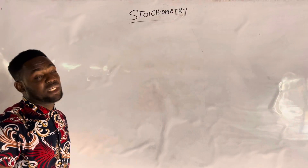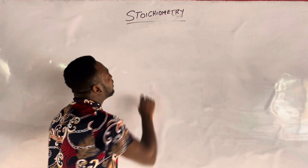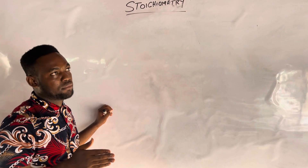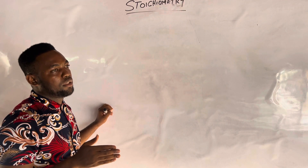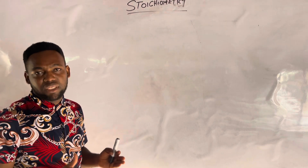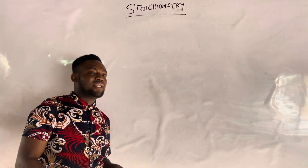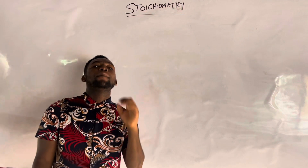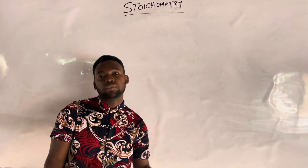Welcome to another wonderful video on a very important concept in chemistry called Stoichiometry. Stoichiometry usually studies the relationship between the reactants and products in a balanced chemical equation. That is why in some tests we can see this topic written as mass and volume relationship.